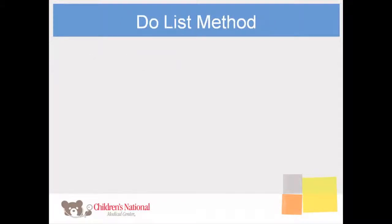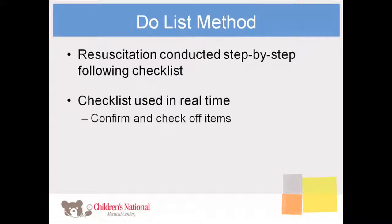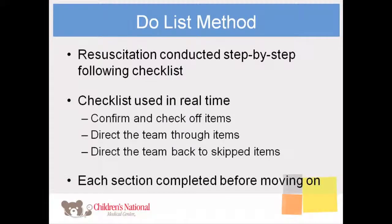In the do list method, the checklist is used to lead the team using a step-by-step approach. You should use the checklist in real time, either confirming and checking off items as the team completes them, or directing the team through the checklist items, or, if necessary, directing the team back to skipped items. Note that while you can use the checklist to direct team members, they do not need to wait to be told what to do. For each section of the checklist, it is important that every item in the section be completed and checked off before the team moves to the next section.